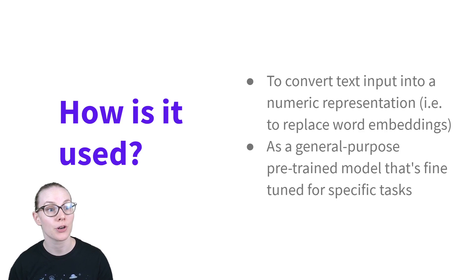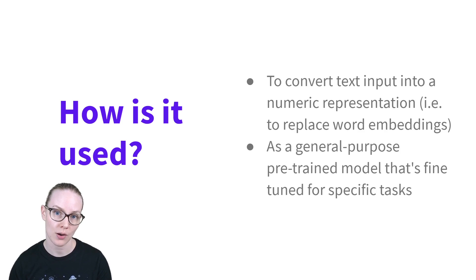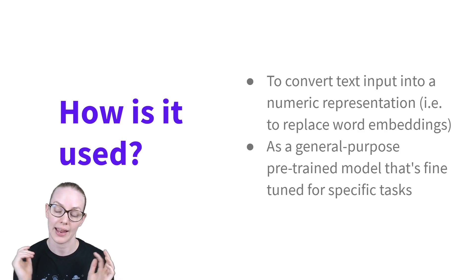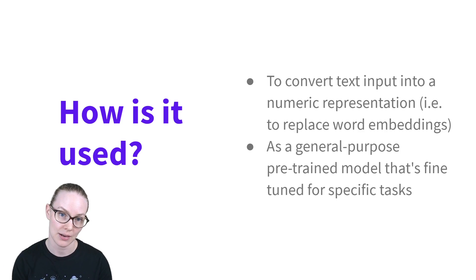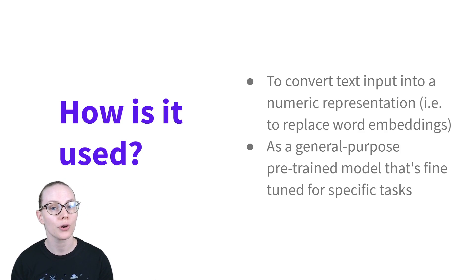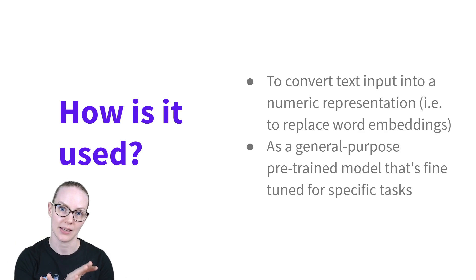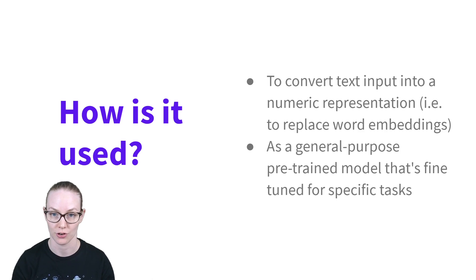How is BERT used? There are two main ways. Either you take the final layer of the sentence that you are looking at and use that as input to a new model, or you do fine-tuning — training a new model that updates the weights of the original BERT model that you're using.